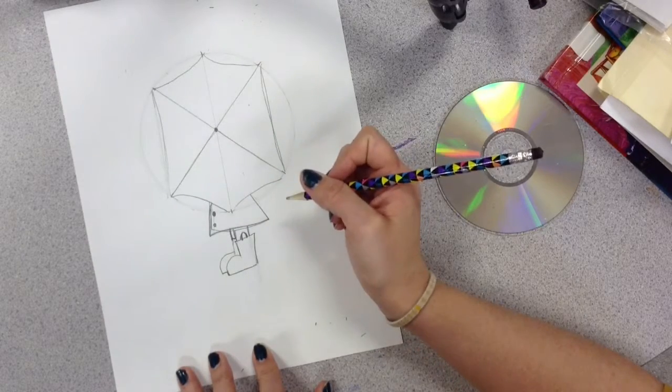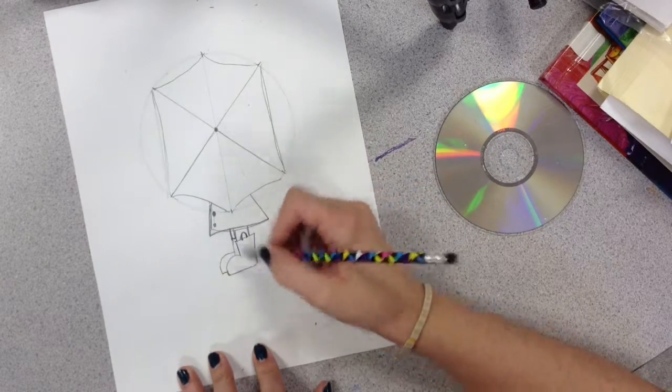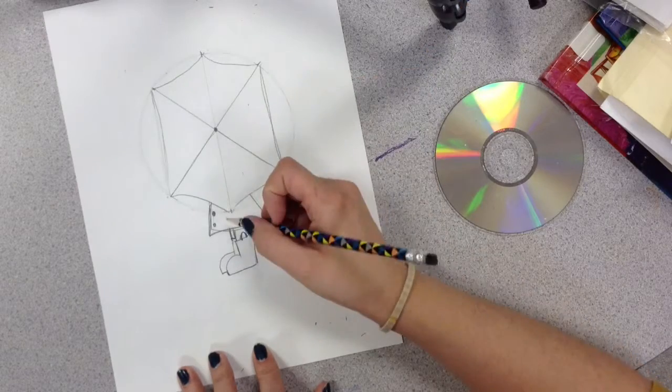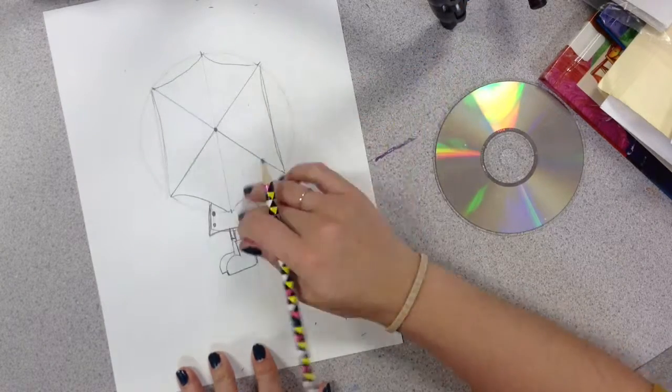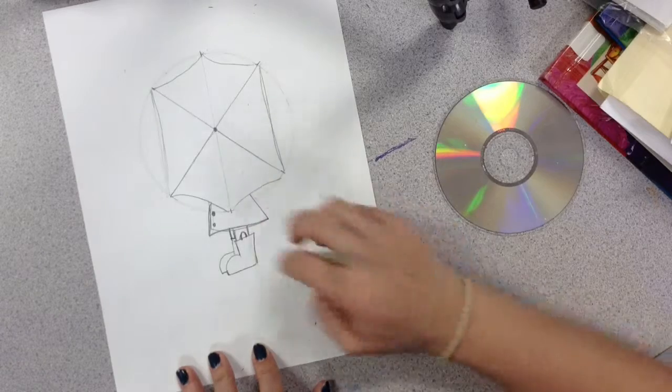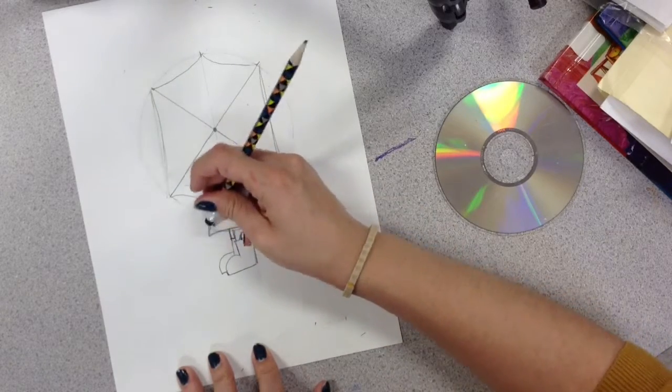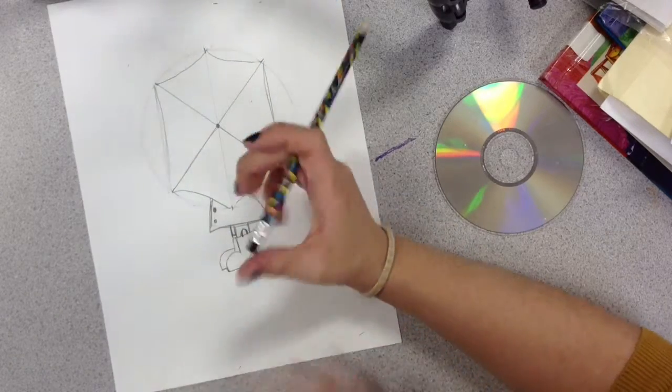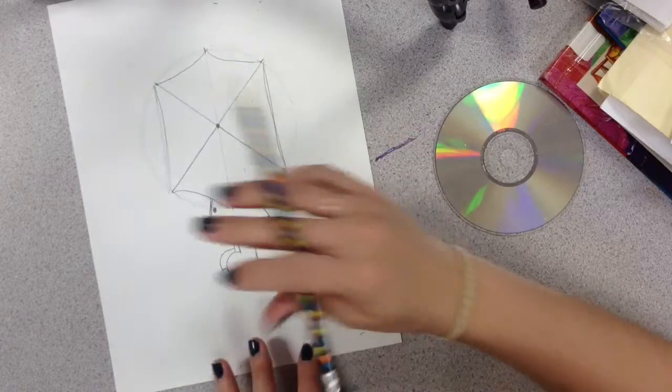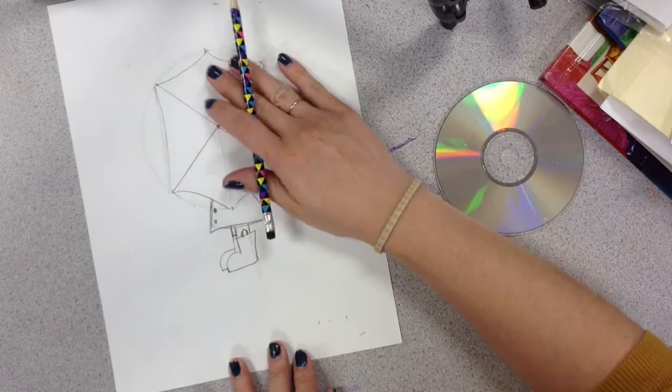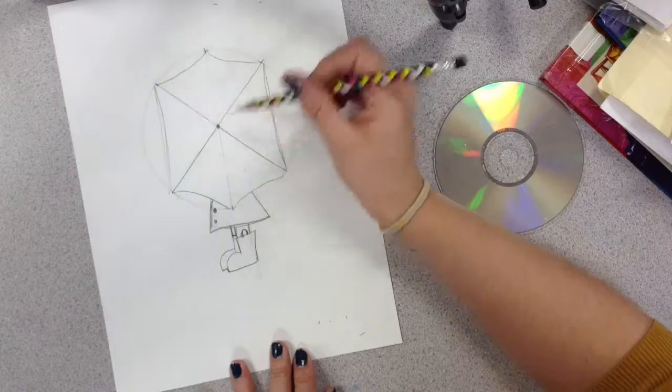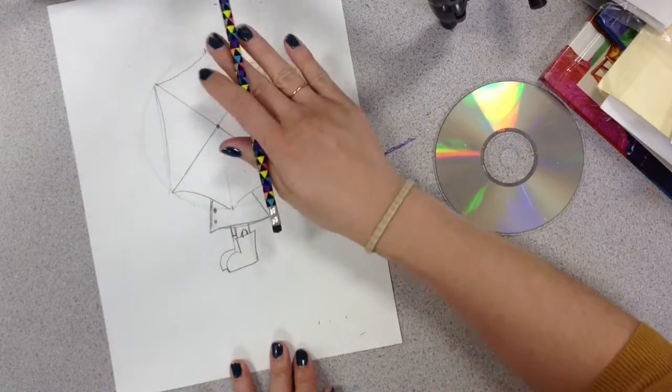Now, what I want you to do, now that you have a coat and their feet and they've got their umbrella, is all we would do is color these in. Use nice coloring skills. Erase any lines that you don't want to keep, that you don't want to show. And coloring your person. Do not color your umbrella. We are painting the umbrella, so do not color your umbrella.